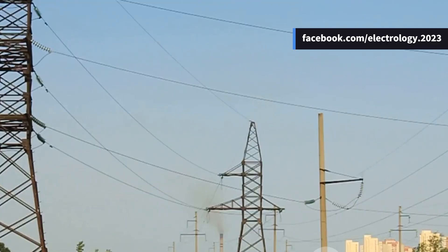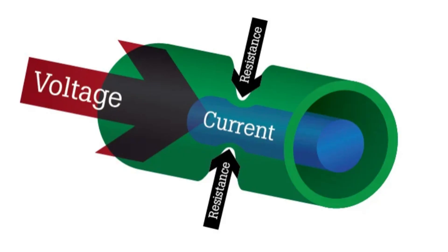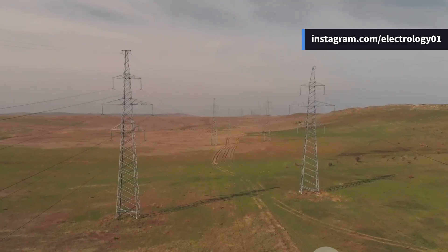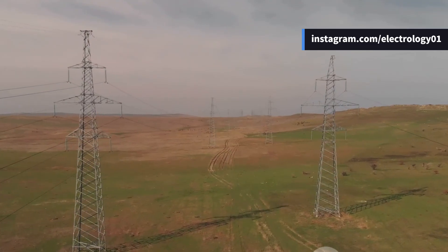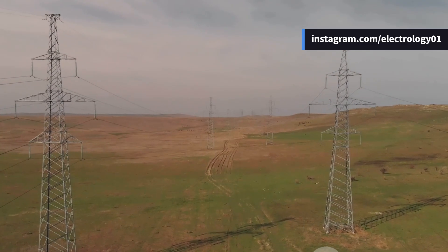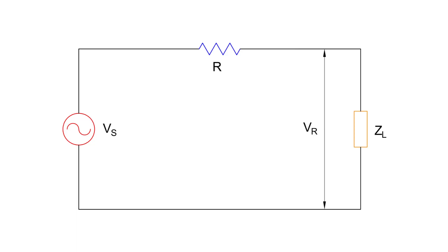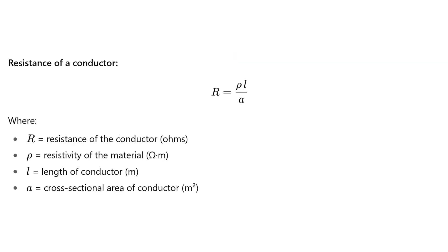Let's begin with resistance. Resistance is the natural opposition of a conductor to the flow of electric current. In a transmission line, this resistance is not concentrated at one spot; rather, it is distributed uniformly along the whole length of the line. For easy analysis, however, we usually imagine all of it lumped at one place. The formula is simple: resistance equals the resistivity of the conductor multiplied by its length divided by the area of cross-section.